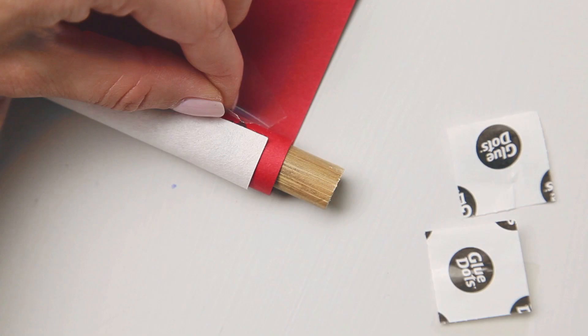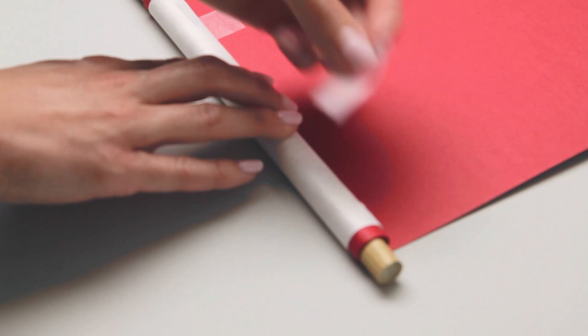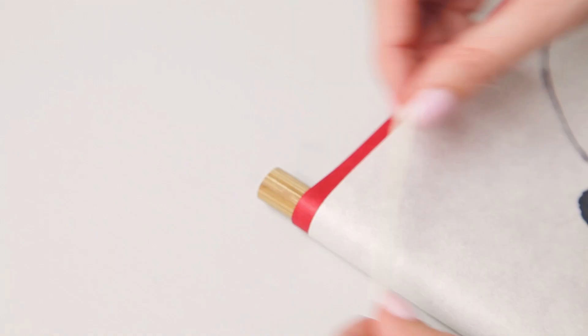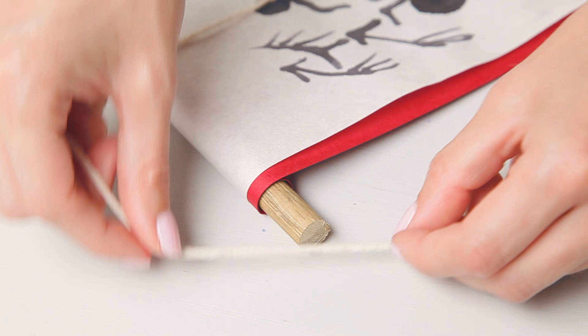On one side of your wall mount, roll the dowel around the paper, and secure it with some glue dots. Repeat this process on the other side. You can add some clear tape to reinforce your wall mount.